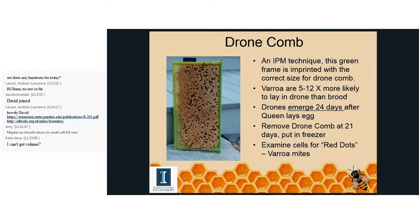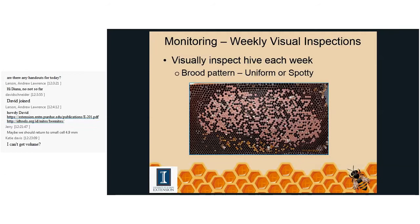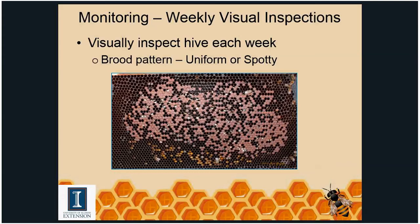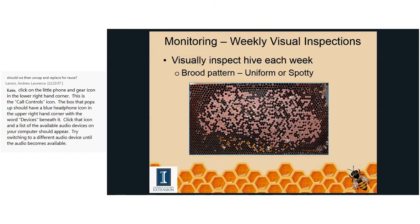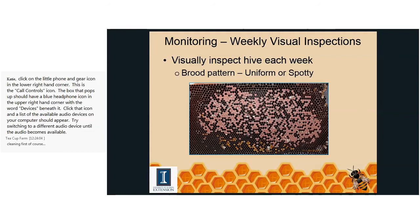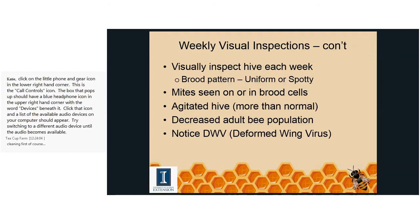Weekly visual inspections are essential. First, check for a uniform brood pattern — a spotty pattern with many open cells is not a good sign. Look for varroa mites on capped brood cells or inside brood cells on larvae before capping. Check whether the hive seems more agitated than normal, which can indicate something is affecting the hive — web worm, small hive beetle, a mouse. Also watch whether the bee population is increasing as expected through spring and summer.